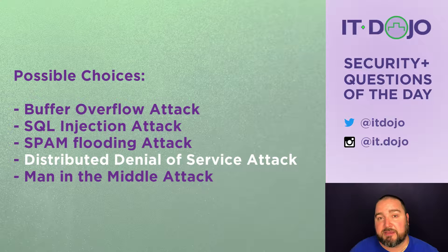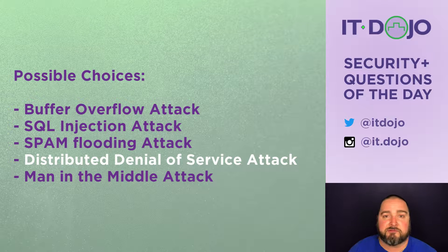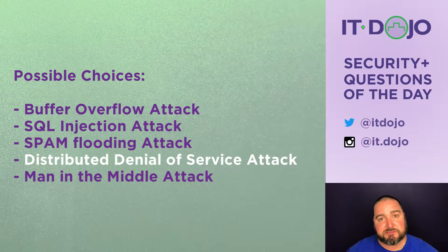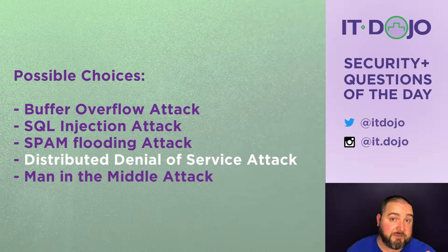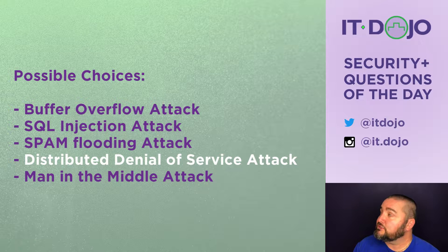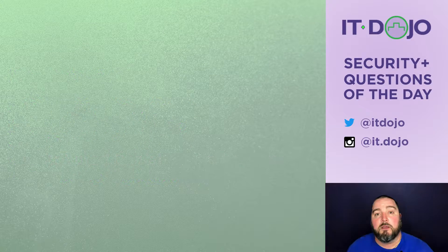The last option on the list is a man-in-the-middle attack — no, that's not what we're looking for. A man-in-the-middle attack is any circumstance where an attacker manages to position themselves between two otherwise legitimate nodes and intercept traffic to observe, manipulate, or modify it — or in some cases simply discard it, which would be a denial of service but not a distributed denial of service. So the best answer from a textbook definition perspective is a distributed denial of service attack.